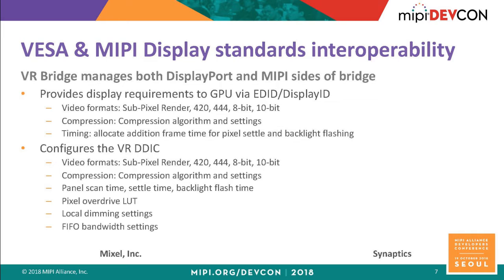The bridge chip configures the GPU by providing the capabilities of the display subsystem — video format such as 4:2:0 or 4:4:4, 8 or 10-bit pixel, and what type of compression it supports. It also defines to the GPU what panel and frame timing is needed to allow pixel settling time and backlight flashing. Similarly, the bridge chip configures the DDI-C with video format, compression type, and specific scan time, settle time, and backlight flash time, plus pixel overdrive, local dimming, and FIFO bandwidth adjustments.